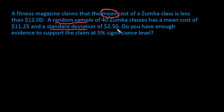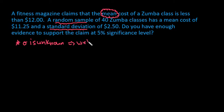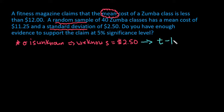And a standard deviation of $2.50. So for this one, sigma is unknown. Remember that sigma is our notation for population standard deviation. We know that this sample standard deviation is $2.50. So since we know the sample standard deviation, this leads us to using a T-test.